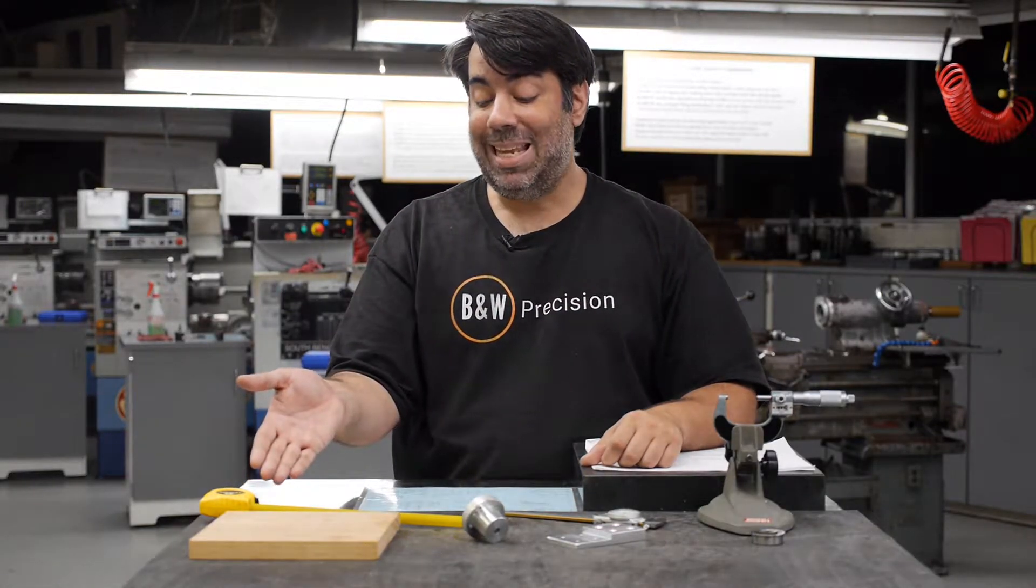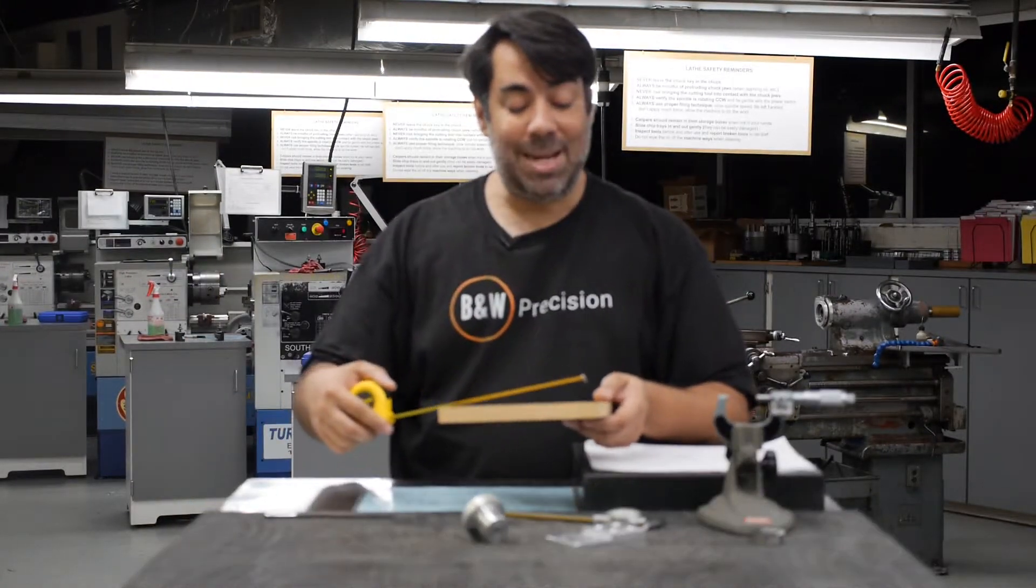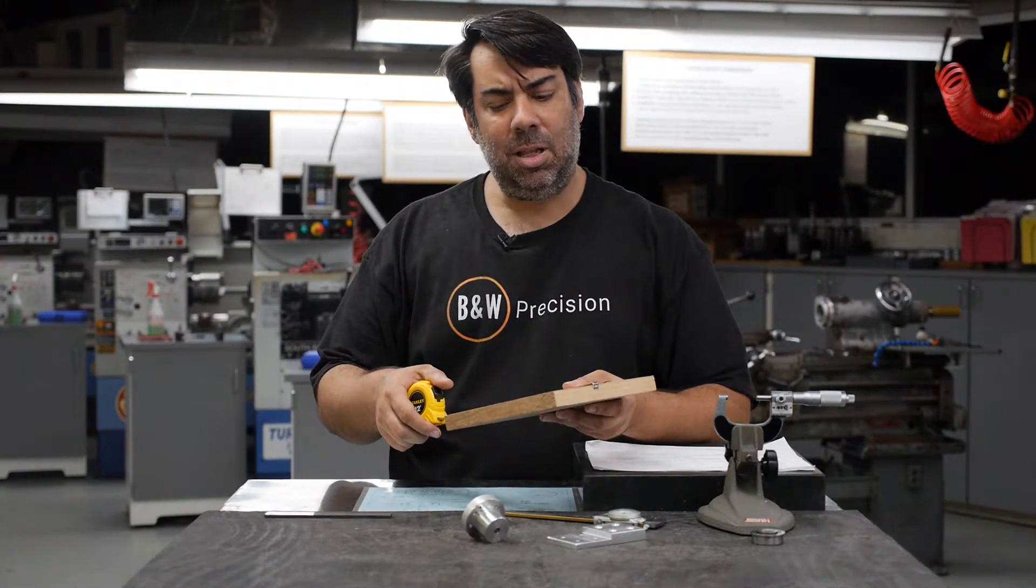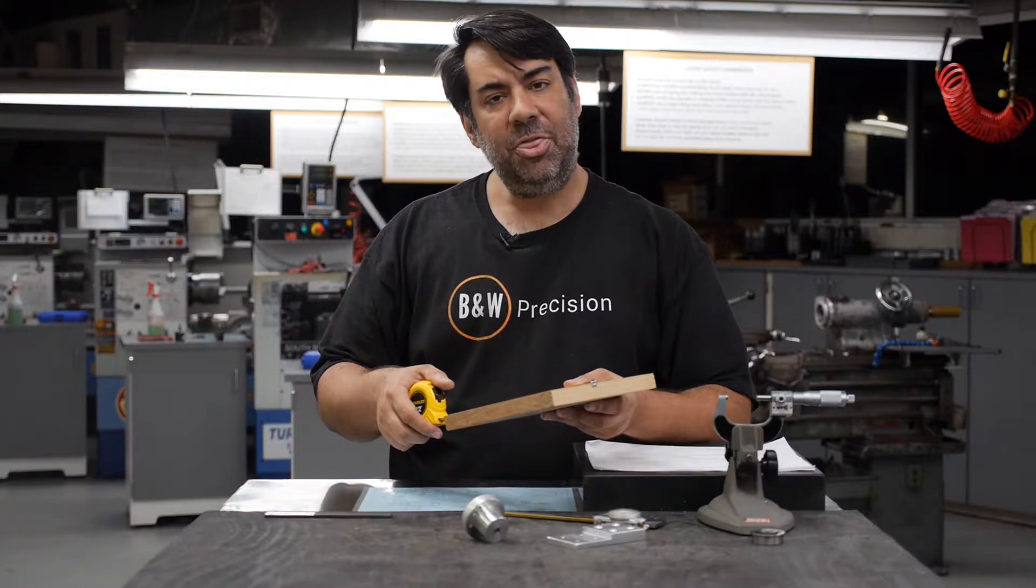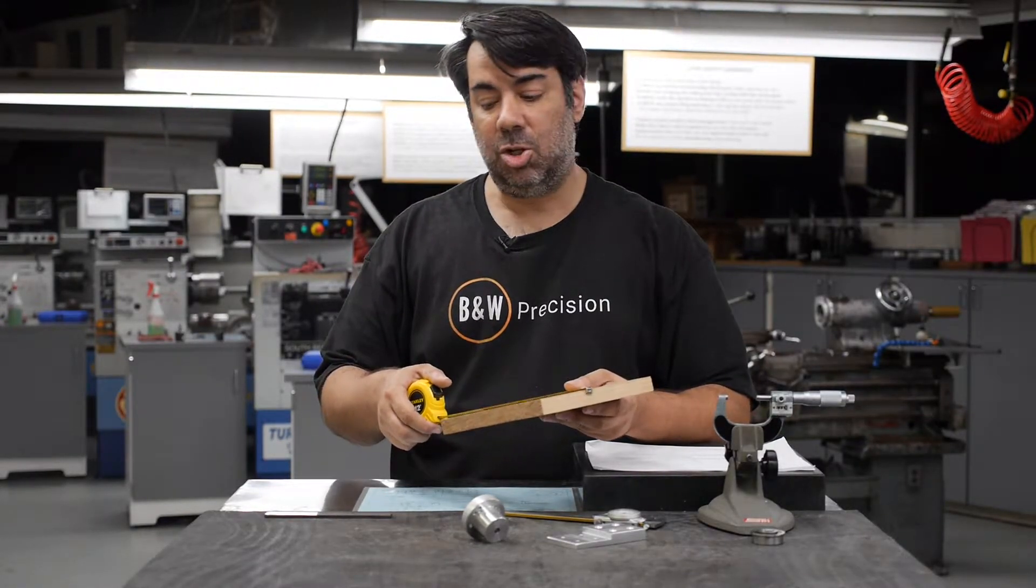Starting with the least accurate, we have the tape measure, a common tool that most of us have used many times. When using a tape measure, the accuracy is typically around plus or minus 1/32nd of an inch, which is roughly plus or minus 30 thousandths of an inch.